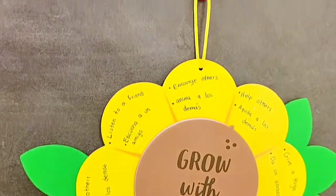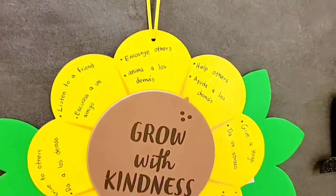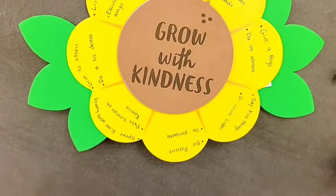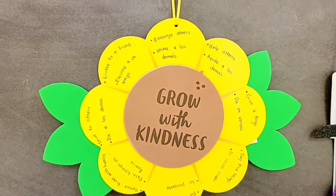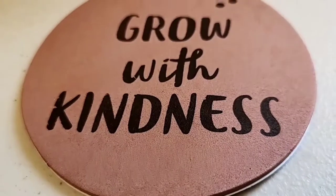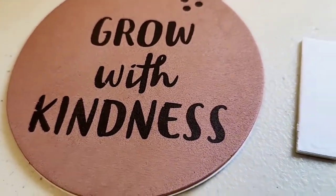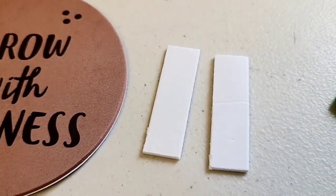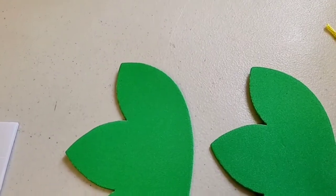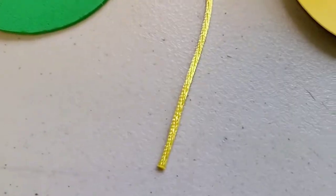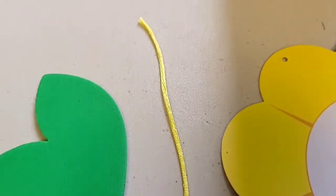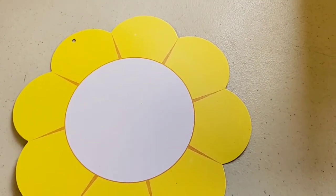Good morning everybody, we're doing our new craft kit of the week, a Be Kind Sunflower craft kit. Here are the materials for the craft kit. The kit comes with a brown paper with grow with kindness, two double-sided tape, two sets of leaves, a yellow string, and the sunflower base.